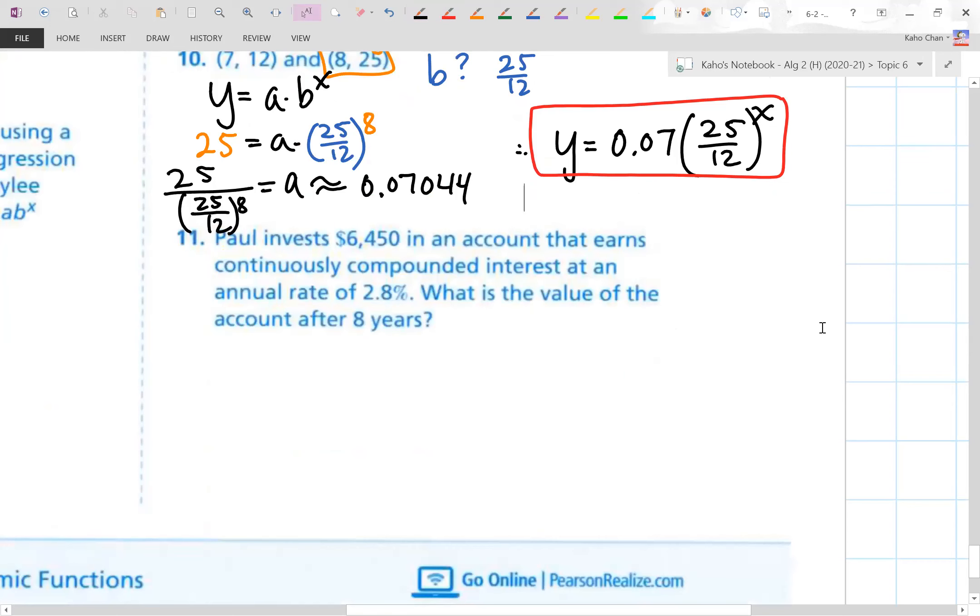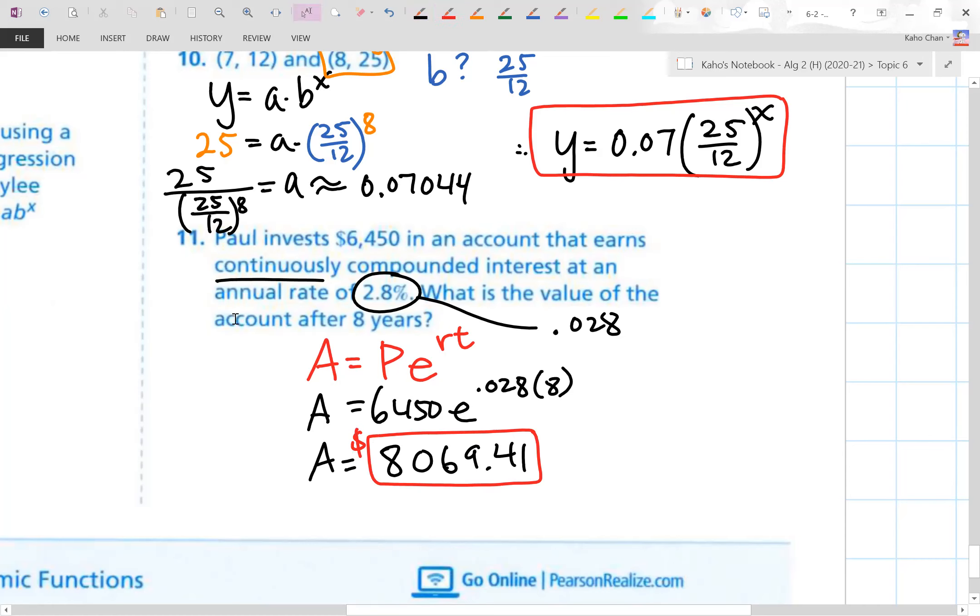Paul invests $6,450 in an account that earns continuously compound interest at an interest rate of 2.8%. What is the value of the account after eight years? This is pretty straightforward. Key is continuously. We're going to use PERT, aren't we? Plug the numbers in. $6,450. Interest rate converted to a decimal is 0.028 to the power of eight years. Punch it into the calculator. You will get $8,069.41. I think we are done. Thank you for hanging in there. These are word problems. They're tough. They're not easy. If you have any questions, let me know. Thank you very much. See you next time. Bye-bye.